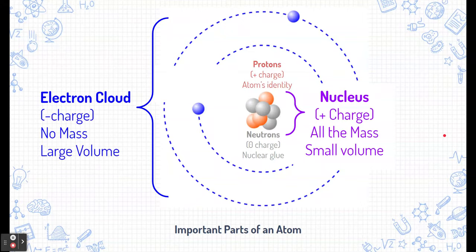Now outside of the nucleus, we have the electron cloud. The electron cloud is a negative charge. It's attracted to the positive nucleus. The electron cloud, we say, doesn't have a mass, although it has a very large volume. It's what makes atoms big. It causes them to have a larger or smaller radius.